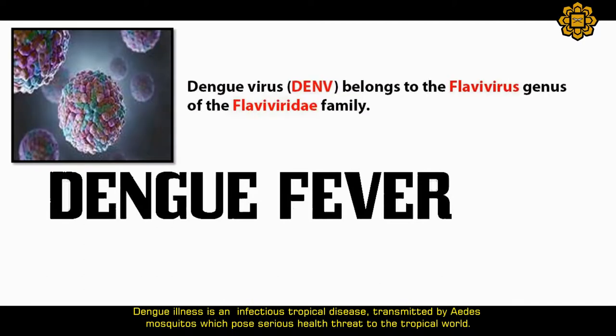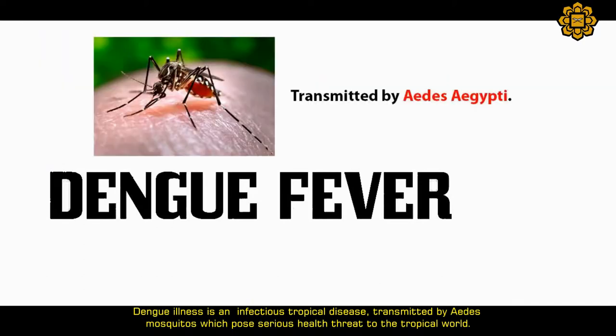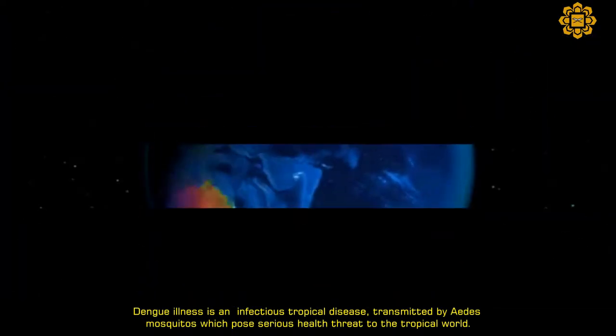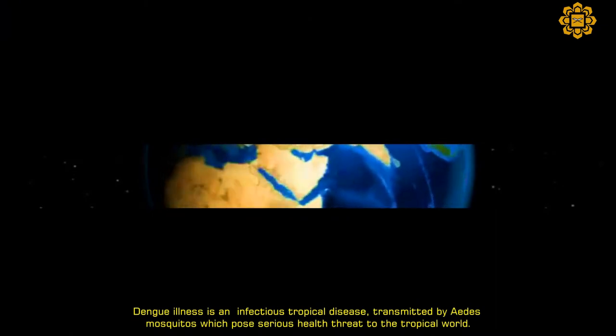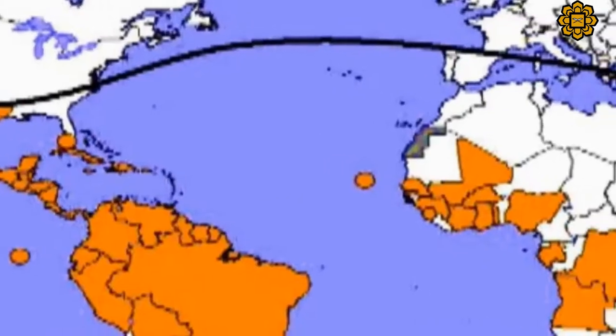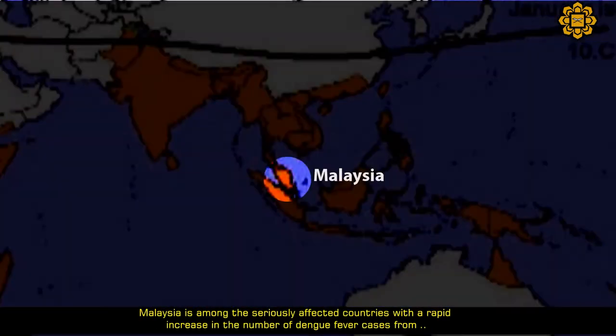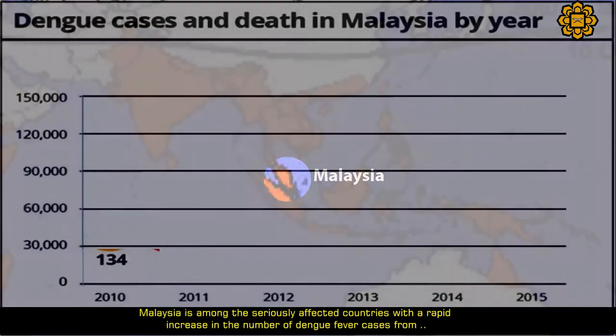Dengue illness is an infectious tropical disease transmitted by Aedes mosquitoes, which pose serious health threats to the tropical world. Malaysia is among the seriously affected countries with a rapid increase in the number of dengue fever cases.